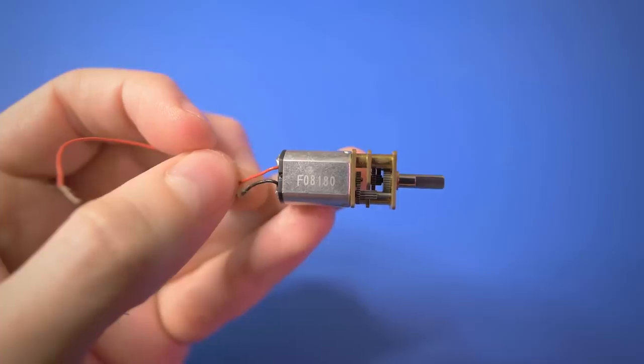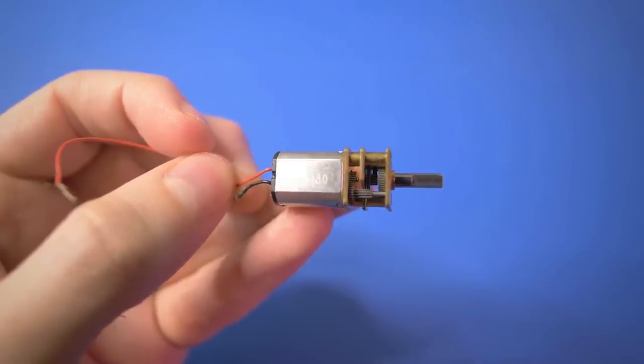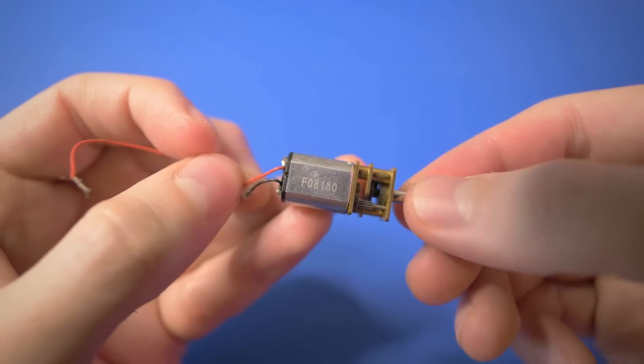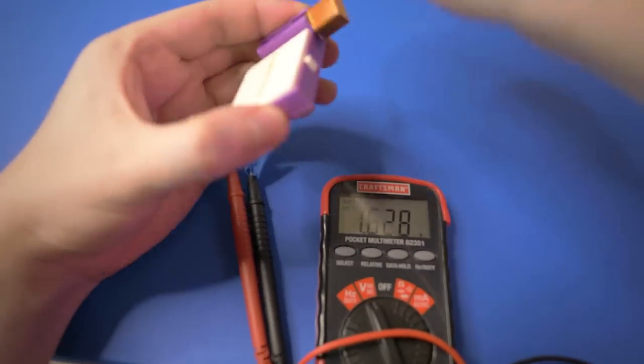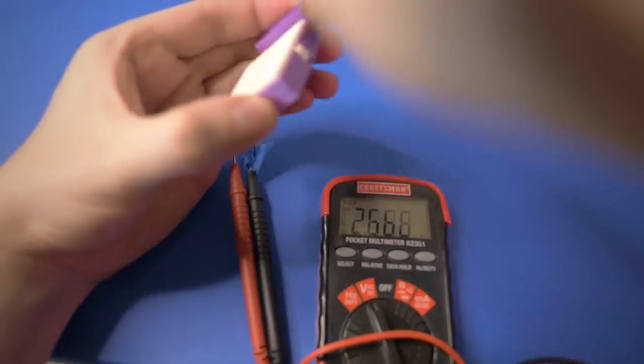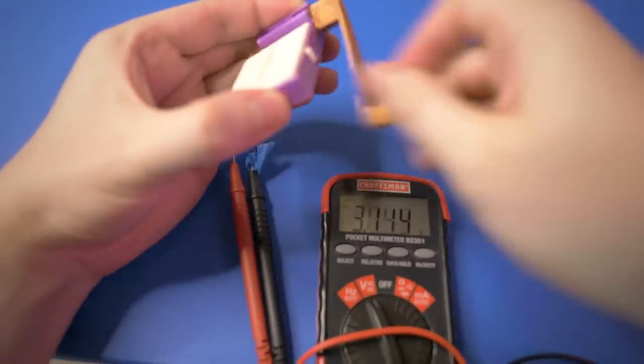Electric motors are pretty cool. Electricity can be used to turn the motor shaft, but reversing that, if the shaft is rotated, it will generate electricity. I printed this holder to help demonstrate. Using this multimeter, you can see we can generate a few volts. And 3 volts is enough to brightly light any LED.